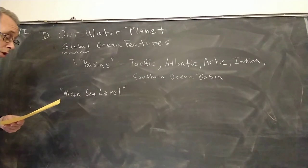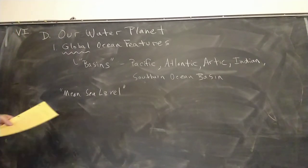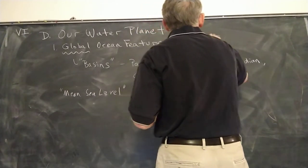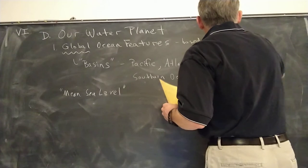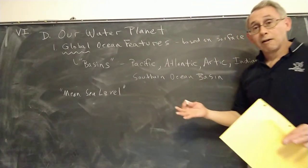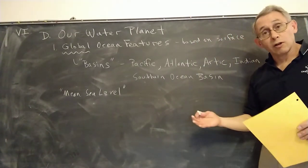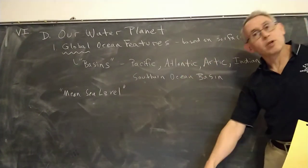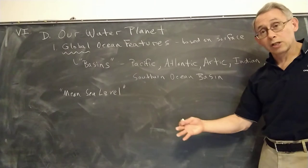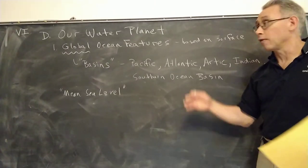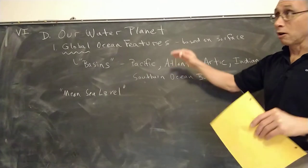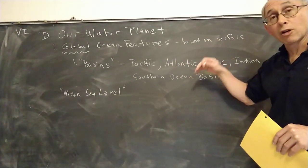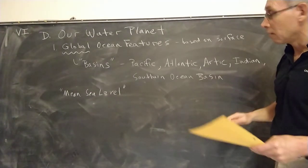Global ocean features are based on the surface — what we have seen for hundreds of years as the oceans have been mapped by explorers. So here is a coastline; we're not seeing what's underneath it, just the coastline itself. These are things that we see big picture as we are looking at it from the surface, not knowing anything about what's going on underneath the ocean.